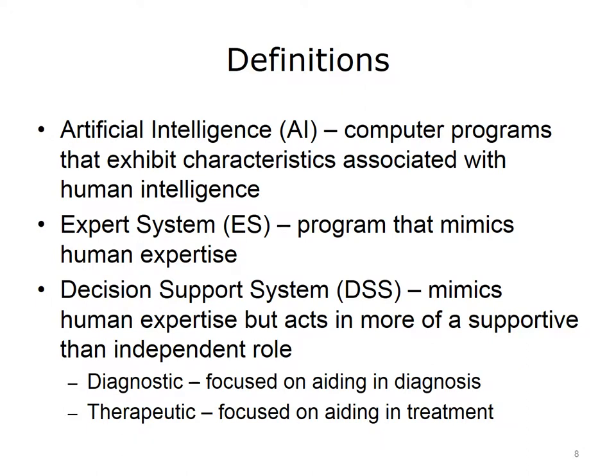This slide defines terms helpful in understanding the development of clinical decision support. Artificial intelligence, or AI, is the area of computer science concerned with building computer programs that exhibit characteristics associated with human intelligence. Expert systems were a type of computer program developed using AI techniques that attempted to mimic human expertise. Decision support systems backed off from being the complete expert, and attempted to play more of a supportive than independent role. Decision support is sometimes broken down into diagnostic decision support, focused on aiding in the diagnosis of patients, and therapeutic decision support, focused on aiding in treatment.